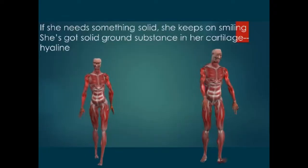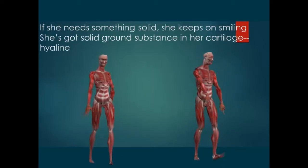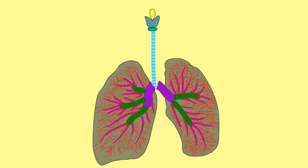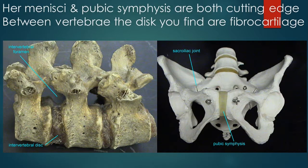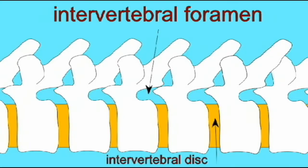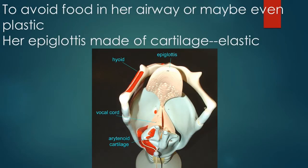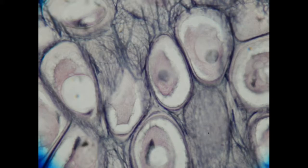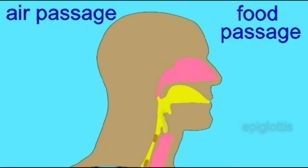If she needs something solid she keeps on smiling. She's got solid brown substance and cartilage hyaline. Her menisci and pubic symphysis are both cutting edge — between vertebrae the discs are fibrocartilage. To avoid blocking the airway, her epiglottis is made of cartilage elastic.